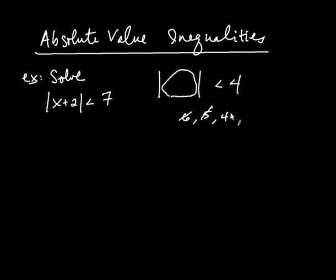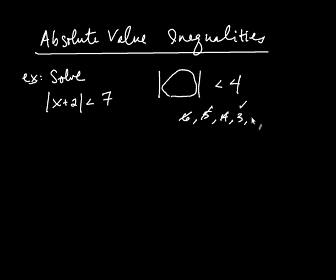What about 4? Well, close, but no — because the absolute value of 4 is 4, and 4 is equal to 4, not less than 4. How about 3? That's a yes, because the absolute value of 3 is 3, which is less than 4. So we have a yes on 3. And likewise, we have a yes on 2, and keep going in this fashion.